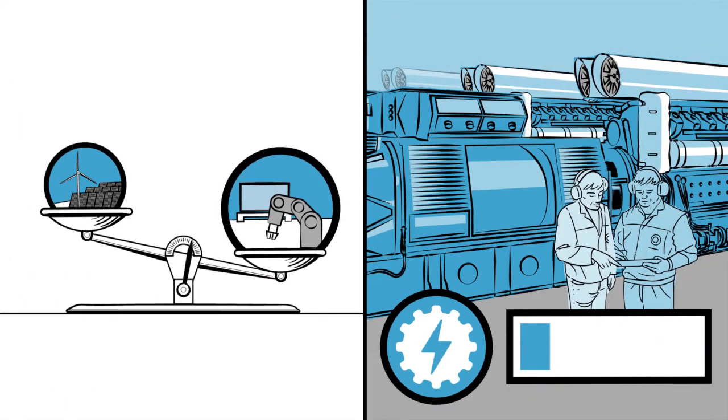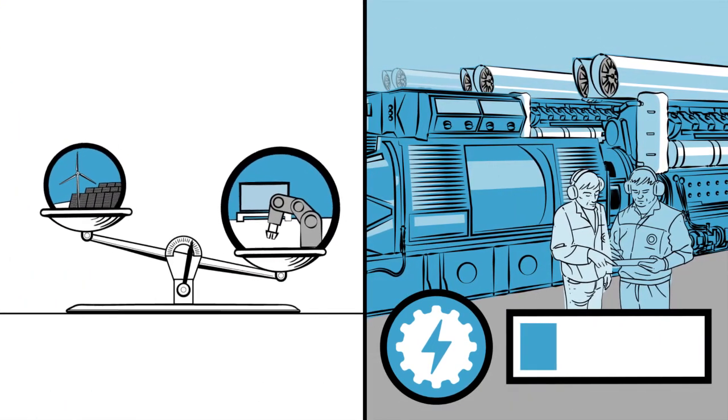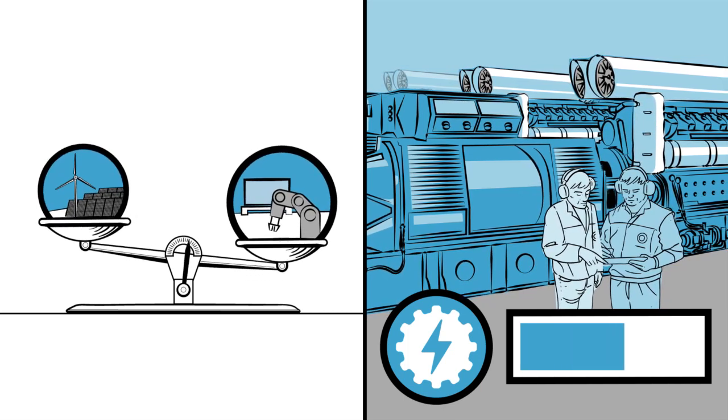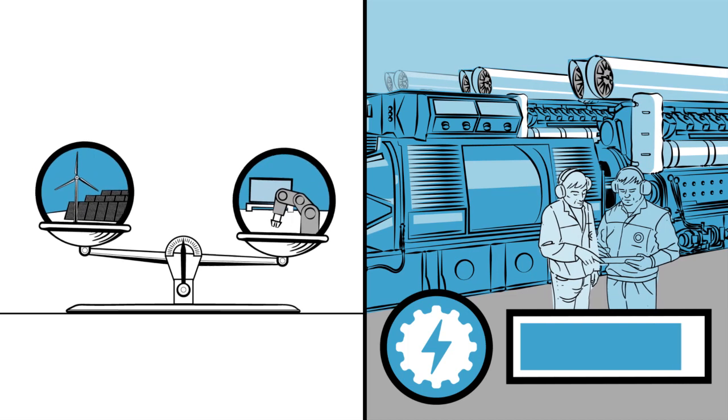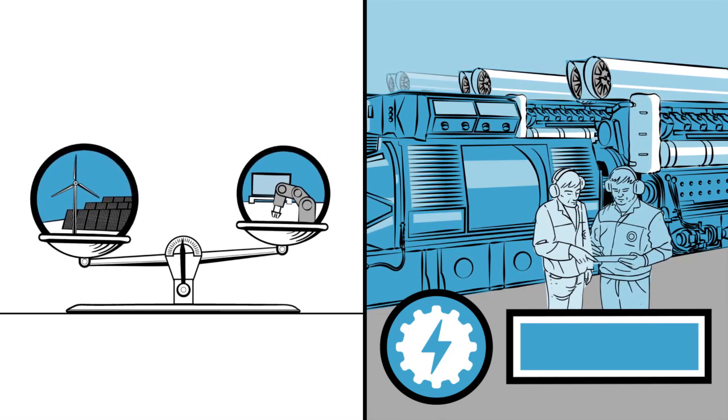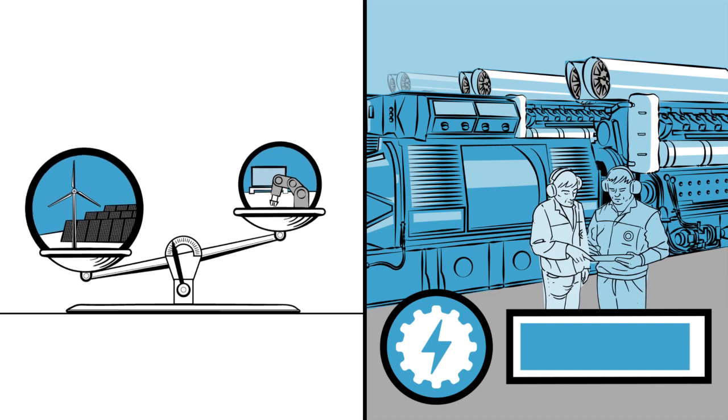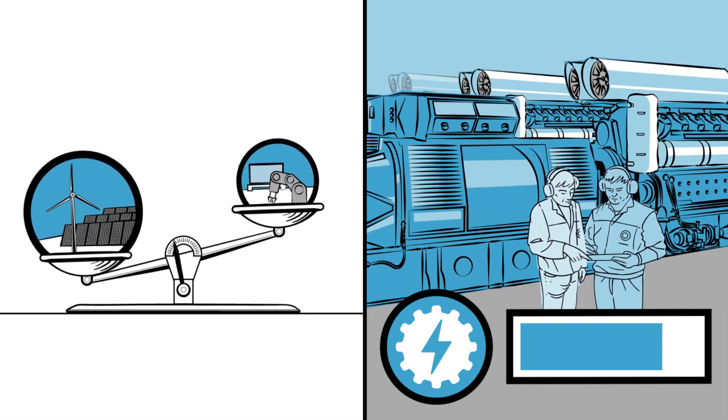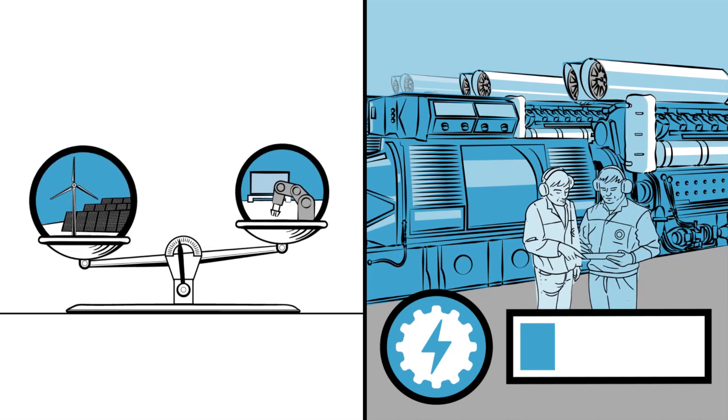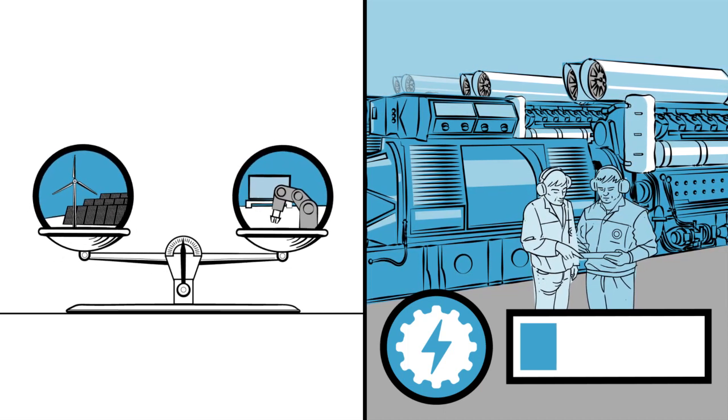If demand in the public grid is especially high, energy producers at the plant can generate more of their own energy. The plant then sources less power from outside and thus relieves the grid. On the other hand, if there's too much energy in the grid, energy production can be scaled back and more energy sourced from outside in order to compensate for fluctuations in the public grid.